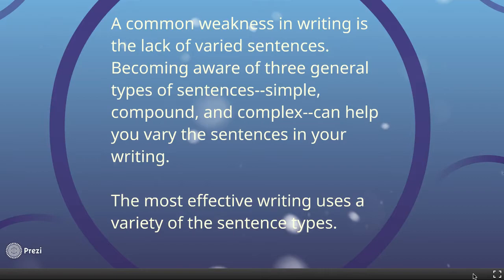Generally what happens is when people start to fall into traps, they tend to write mostly simple sentences. Simple sentences does not necessarily mean short sentences, but it's the same type of sentence over and over again. So if you're able to be aware of what those three general types are — simple, compound, and complex, which is the part you need to write down — that's going to help you vary your sentences in your writing.